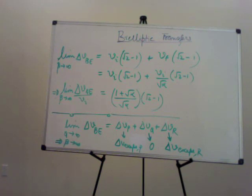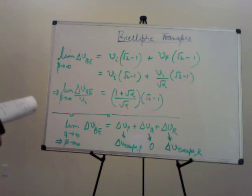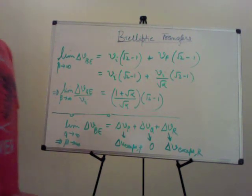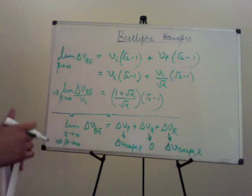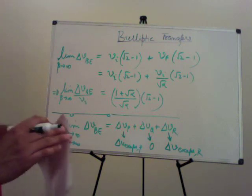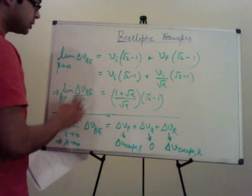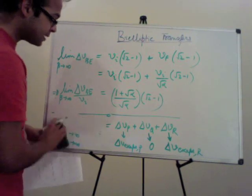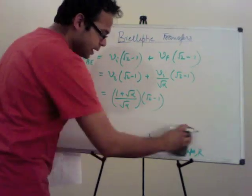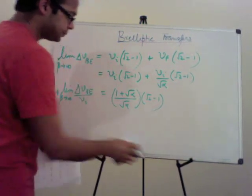The bi-elliptic transfer can be more fuel efficient than the Hohmann transfer. To complete the analysis we need to compare how the bi-elliptic fares against the Hohmann. The total delta V for the Hohmann transfer normalized by initial speed is a known expression in alpha = R_F/R_I, while the bi-elliptic depends on both alpha and beta.